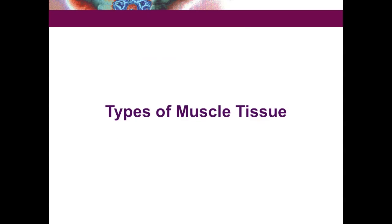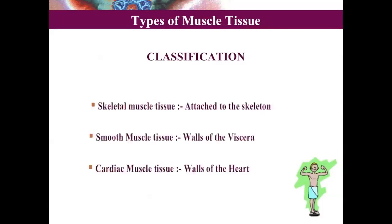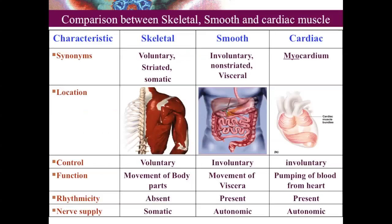There are three types of muscle tissue. Skeletal muscle tissue is attached to the skeleton. Smooth muscle tissue is present on the walls of viscera, and cardiac muscle tissue is found in the walls of the heart.